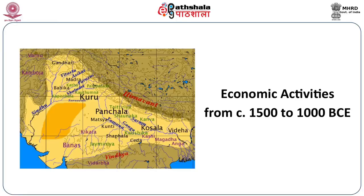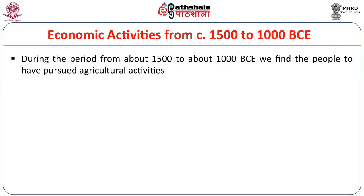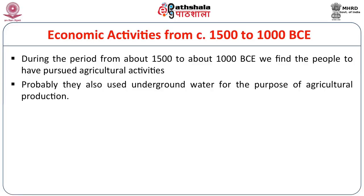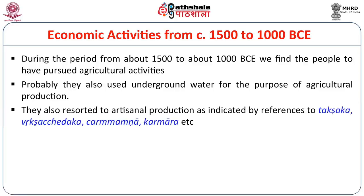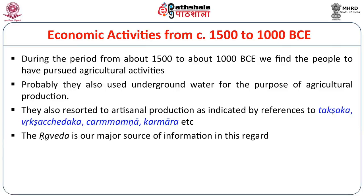The next time bracket is 1500 to 1000 BCE. During this period, people pursued agricultural activities and probably also used underground water for agricultural production. They also resorted to artisanal production, as indicated by references to Takshaka, Briksha Chedaka, Chammakara, Karmara, etc. The Rig Veda is our major source of information in this regard.